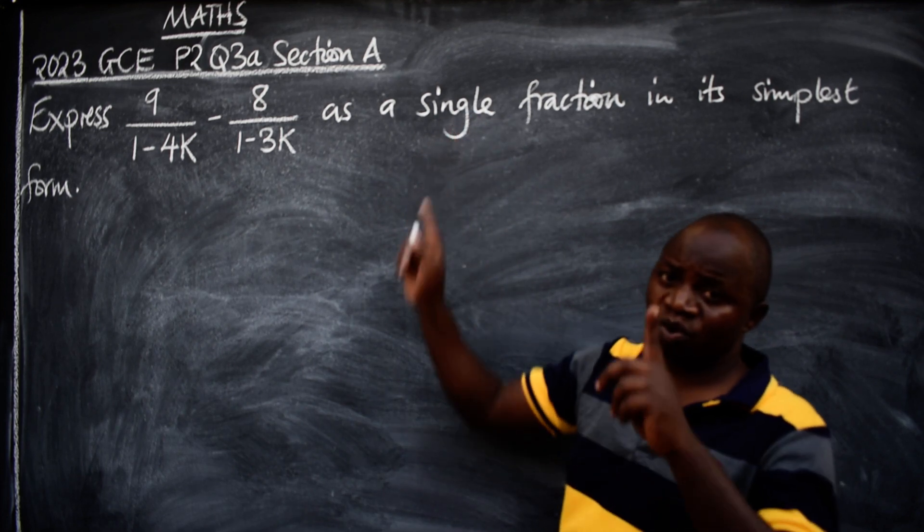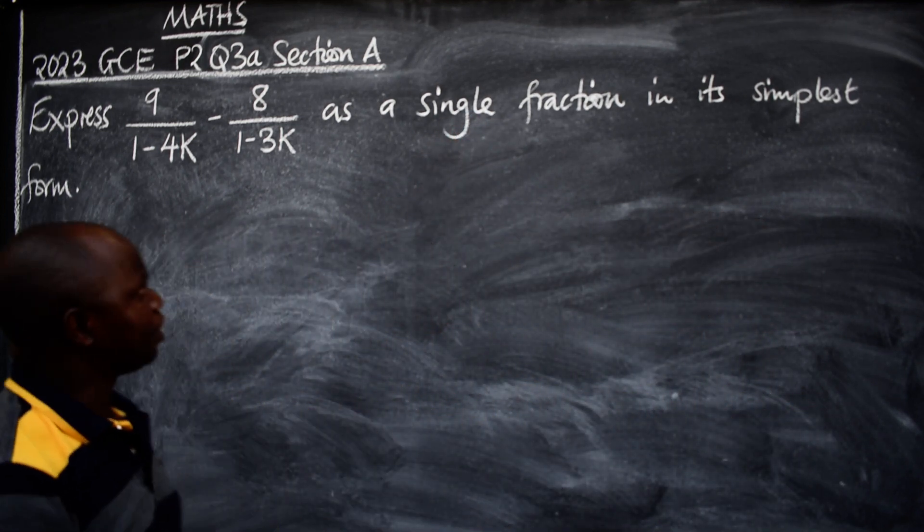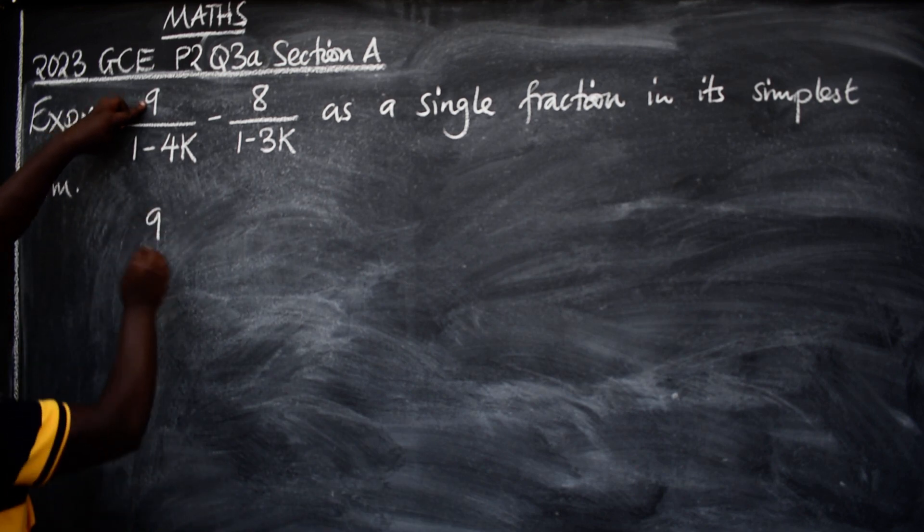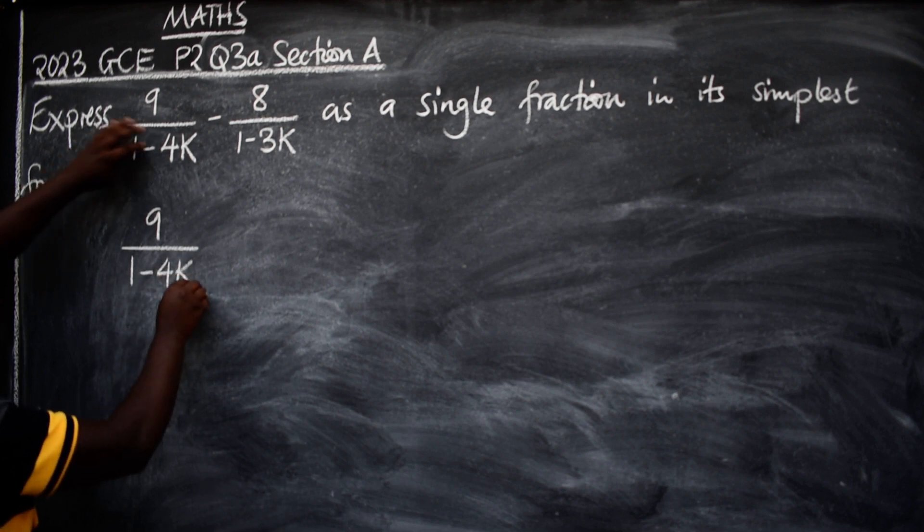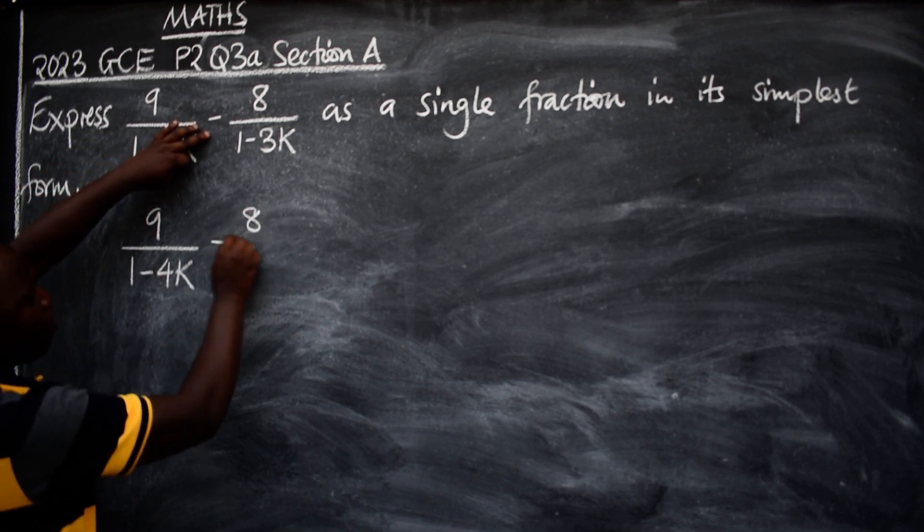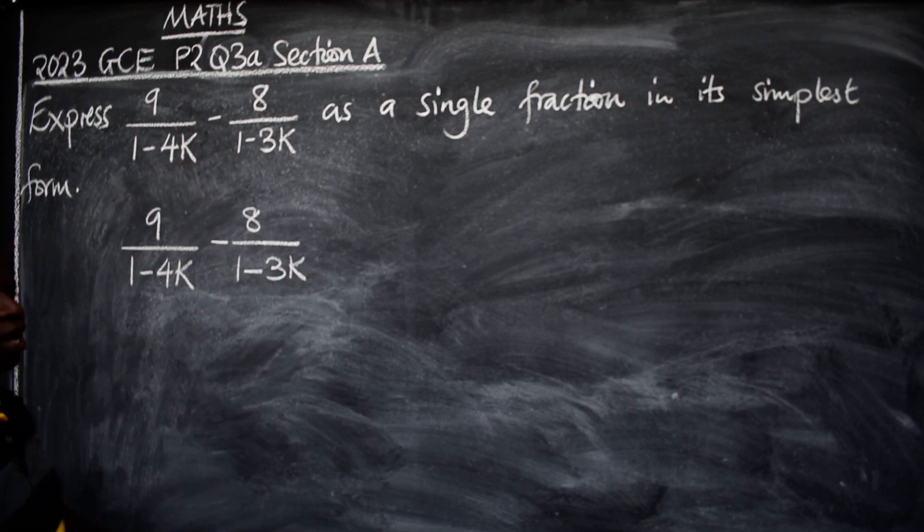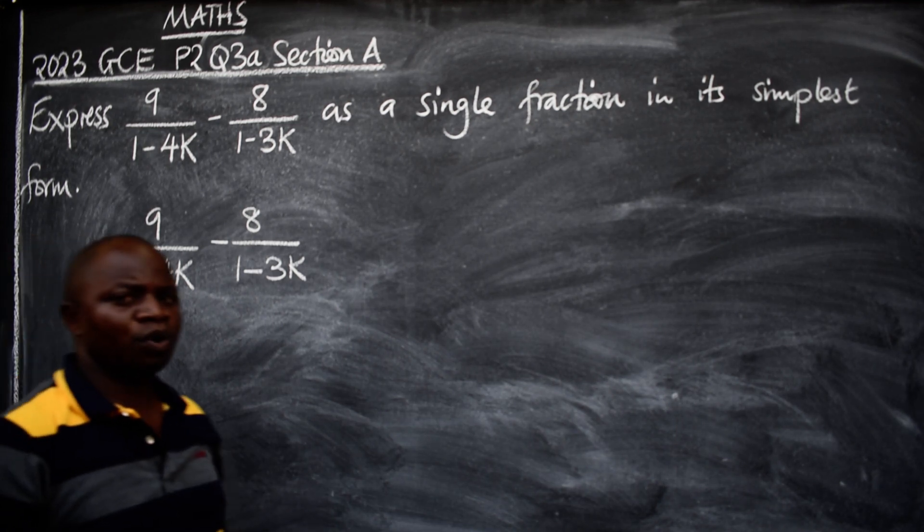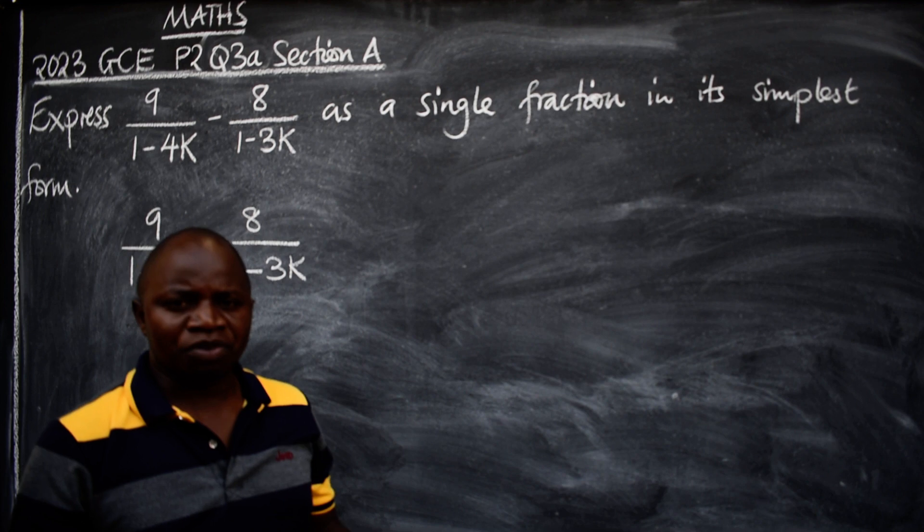How do we go about it? Well, you write the question: 9 over 1 minus 4k minus 8 over 1 minus 3k. After doing that, you will now be able to apply the concept of subtracting or adding fractions.